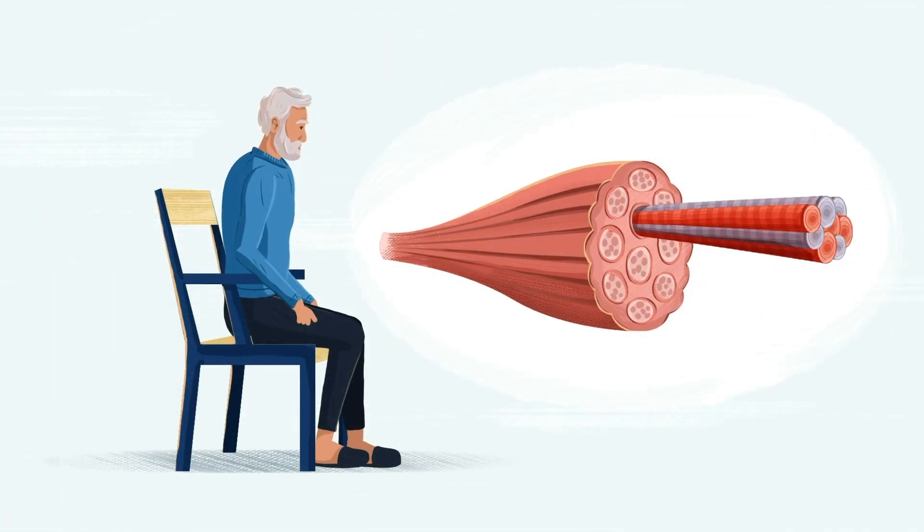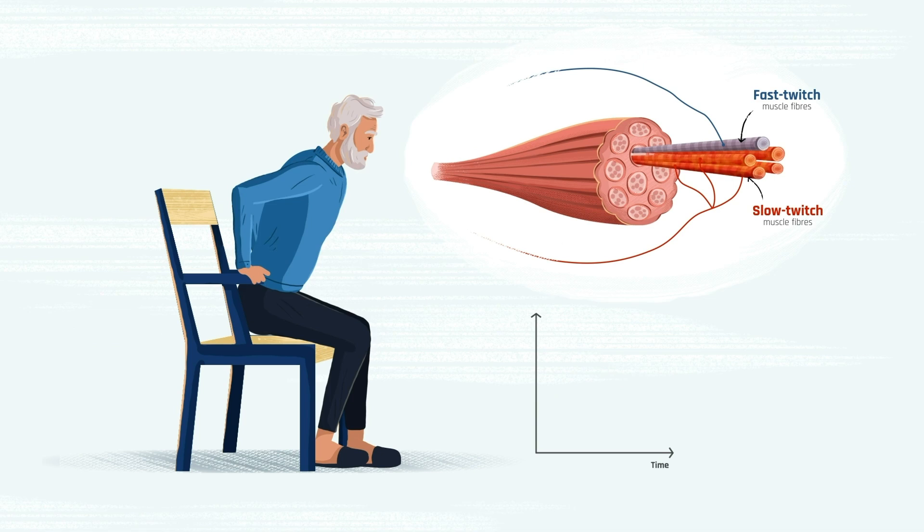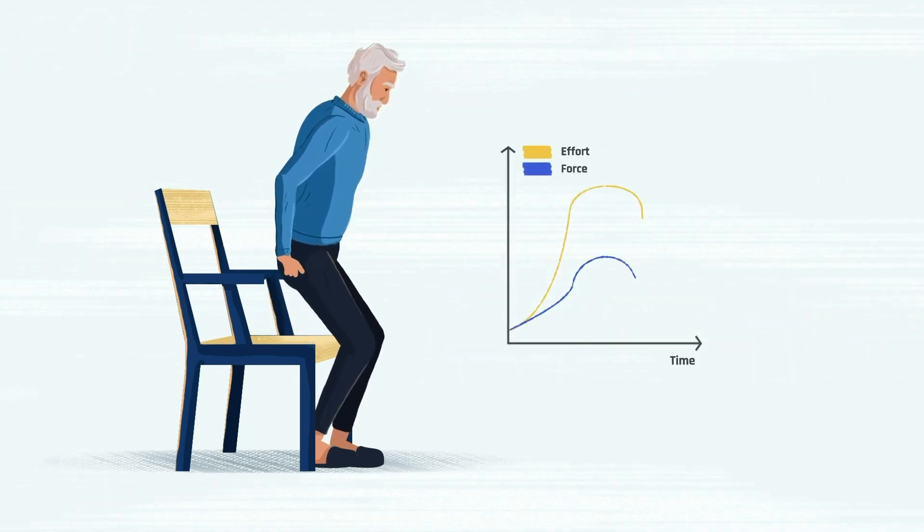As we age, our muscle fibers, especially the fast twitch ones, decline in numbers, becoming thinner and weaker. Therefore, our muscles generate less force. As a result, even basic activities require effort.